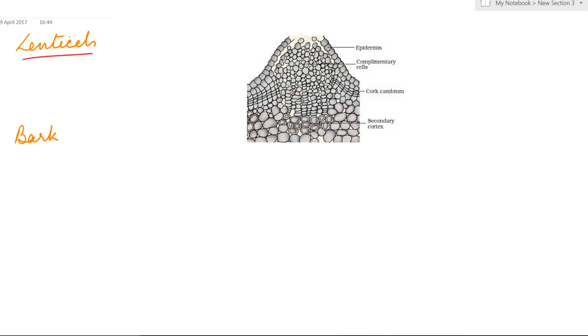Growing among the cork cells are thin-walled living cells called the complementary cells. Thin-walled living cells that are loosely arranged, they together form the lenticels which help in exchange of gases.